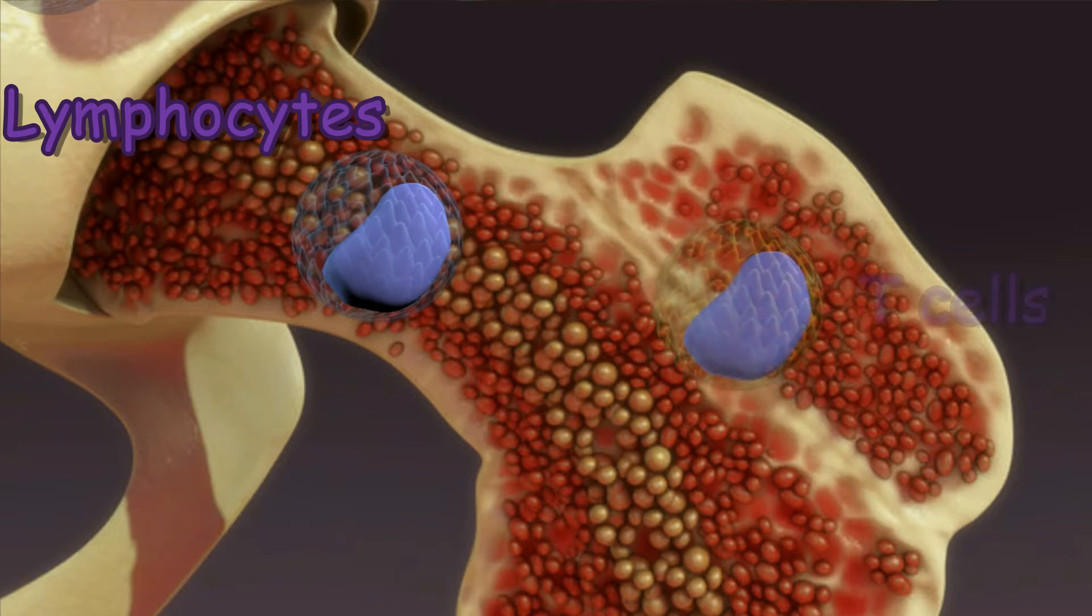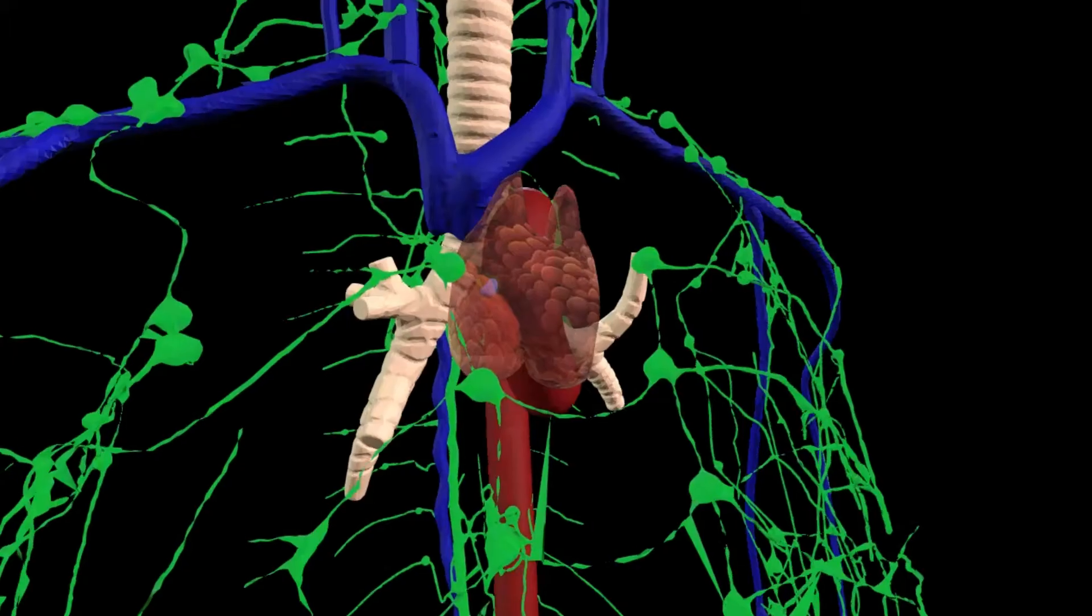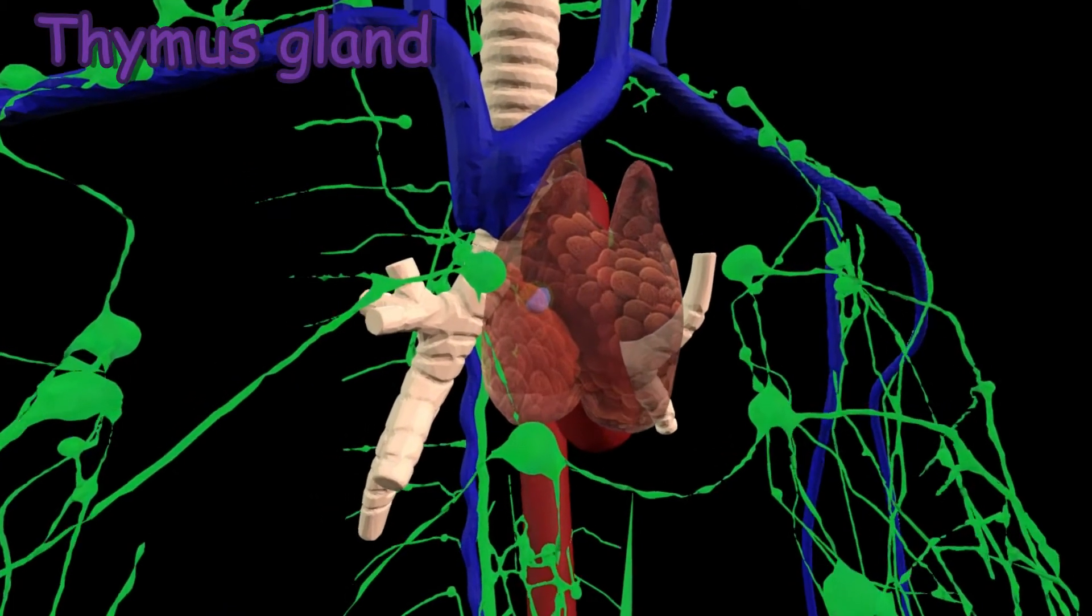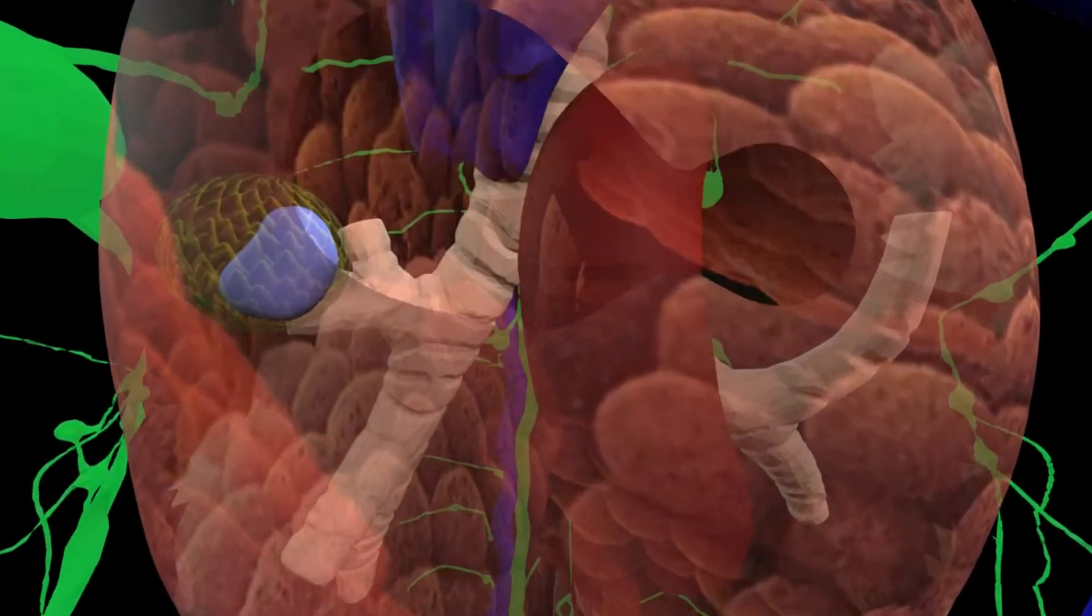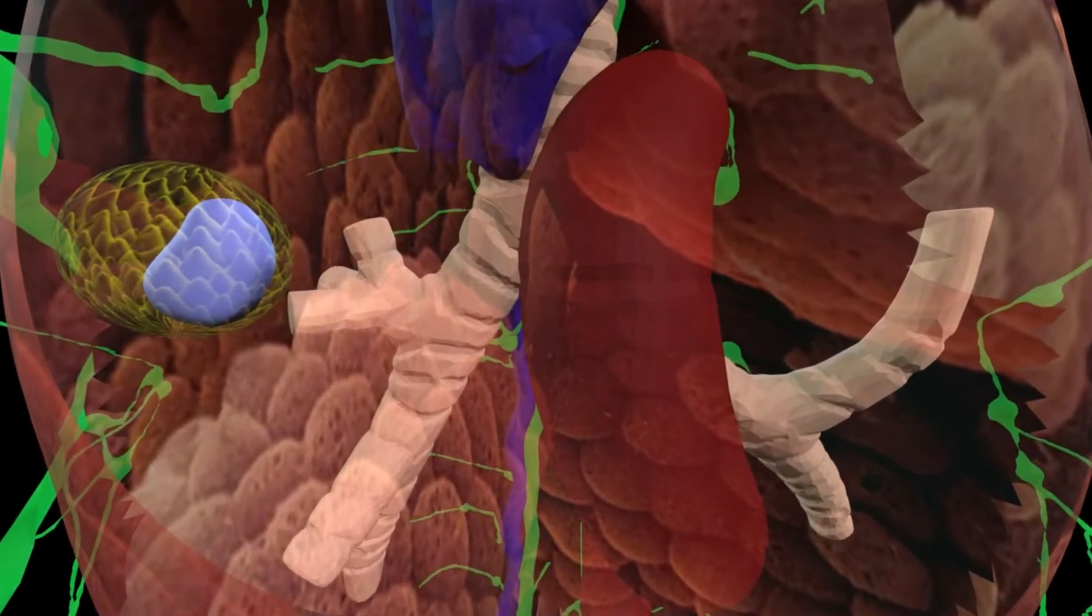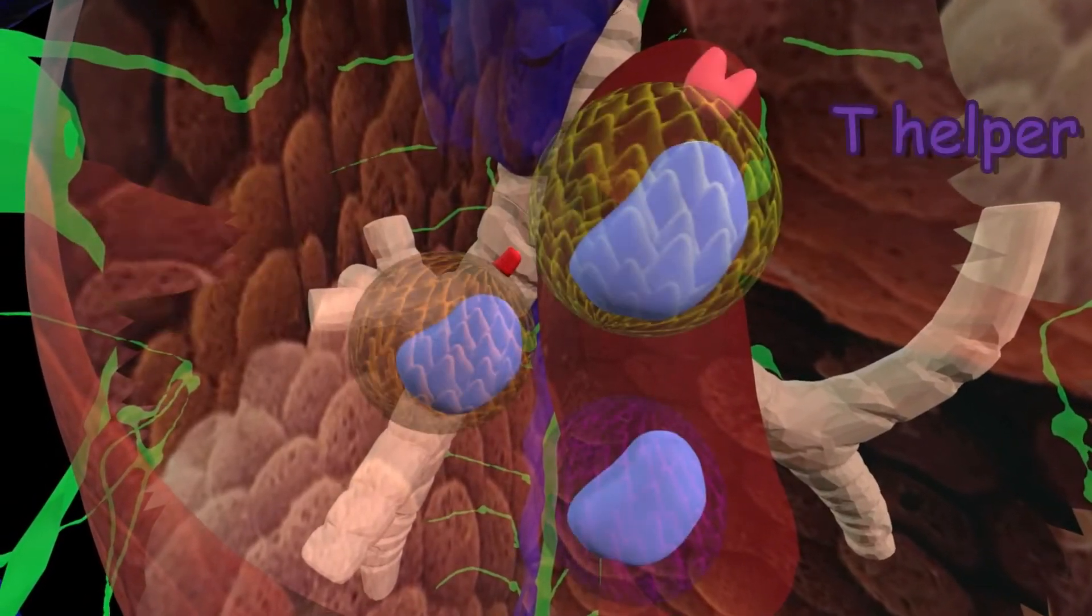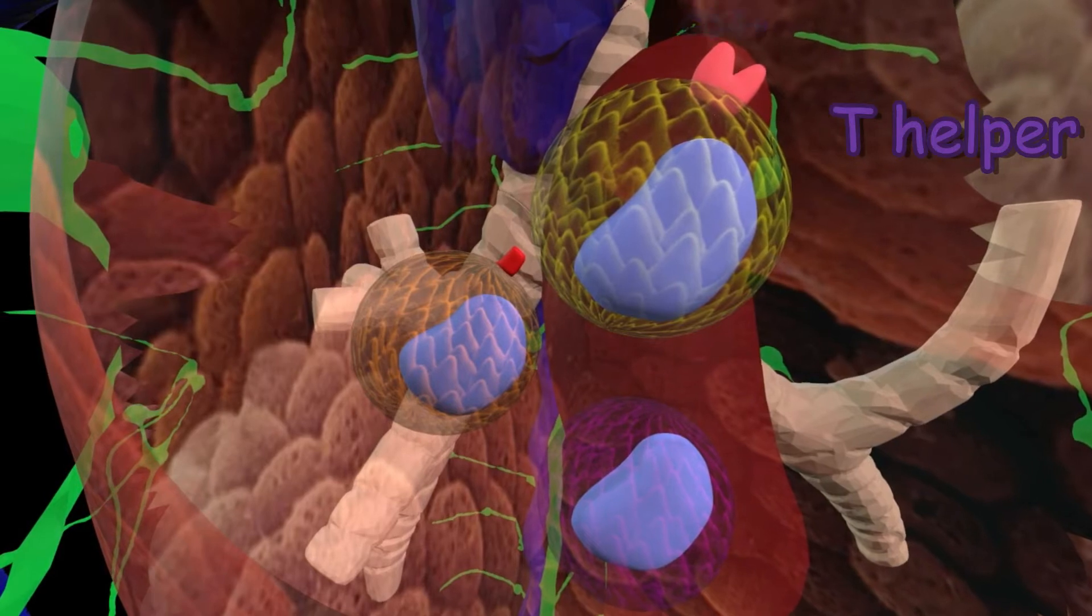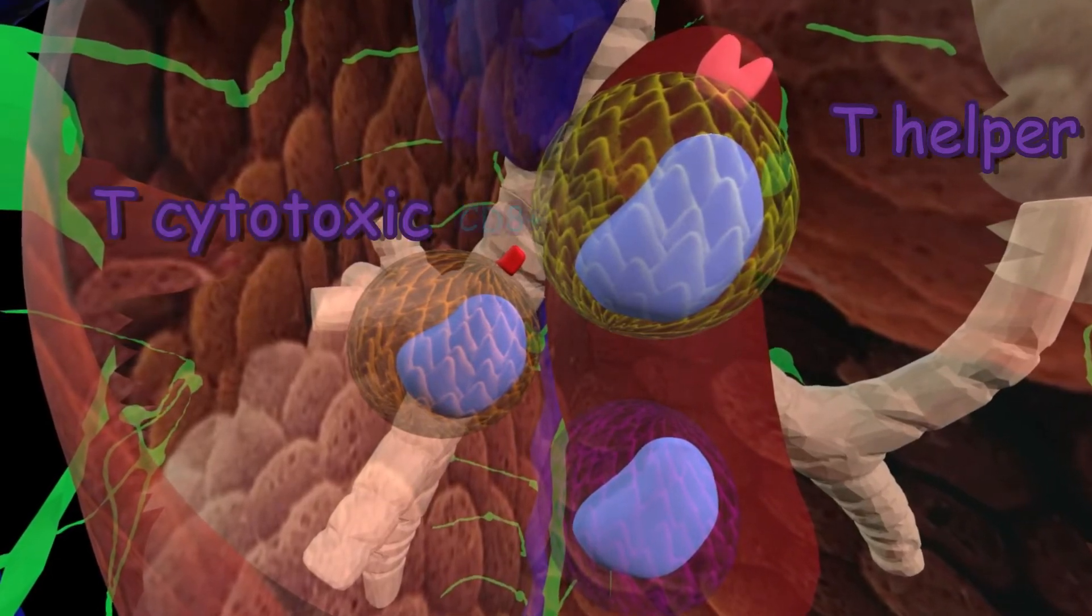The thymus gland is a small organ in your upper chest behind the breastbone, where lymphocytes called T cells grow and mature. The T cells differentiate into T helper cells with CD4 antigen, T cytotoxic cells with CD8 antigen, and T suppressor cells.